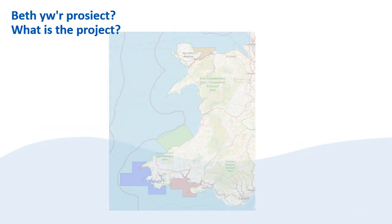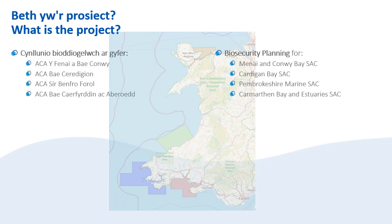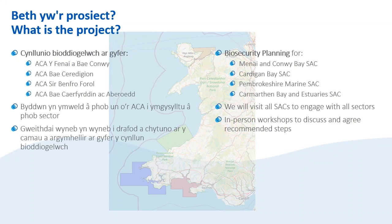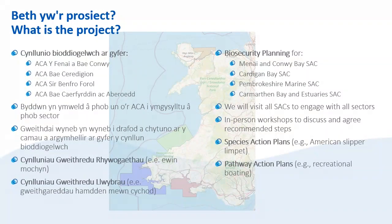The project focuses on four special areas of conservation or SACs: Menai and Conwy Bay, Cardigan Bay, Pembrokeshire Marine, and Carmarthen Bay and Estuaries. As part of this project we will be visiting all four SACs to engage with stakeholders from all sectors and will be holding in-person workshops to discuss, plan and agree biosecurity measures going forward. We will also be producing species action plans and pathway action plans to guide future biosecurity planning.